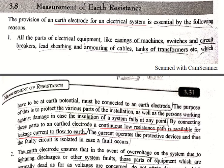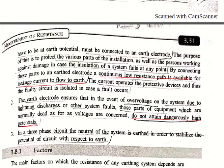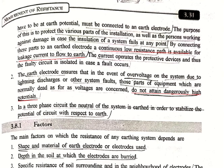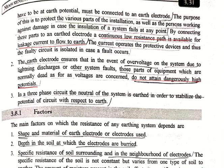Our earth electrode is essential for many reasons. First, all parts of electrical equipment like casings of machines, switches, circuit breakers, lead sheath, armoring of cables, and tanks of transformers must be at earth potential and connected to the earth electrode. The purpose is to protect various parts of the installation as well as persons working against damage in case the insulation fails. By connecting these parts to the earth electrode, a continuous low resistance path is available for leakage current to flow.